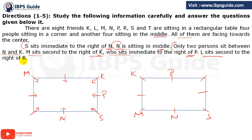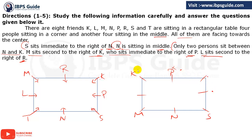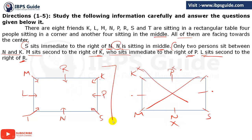L sits second to the right of R. In the first case, R must be here and L must be here. The only person we have left is T, so T will come here. In the second case, there is no valid position for L and R — if L is placed anywhere, the required position for R is already occupied by P, K, or N. So the second case is eliminated, and the only valid arrangement is the first one.